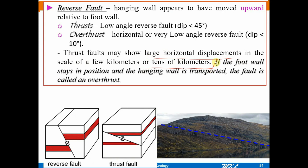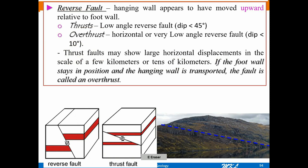Thrust and overthrust: when I say thrust, it includes overthrust. Overthrust is a special case of thrust. A thrust fold is generally a reverse fold because a dip angle greater than 45 degrees is not practically possible for large areas — you will always have a dip angle less than 45 degrees. The thrust fault converts to an overthrust fold when the dip angle is less than 10 degrees. A reverse fold may show large horizontal displacement on the scale of a few kilometers or tens of kilometers.